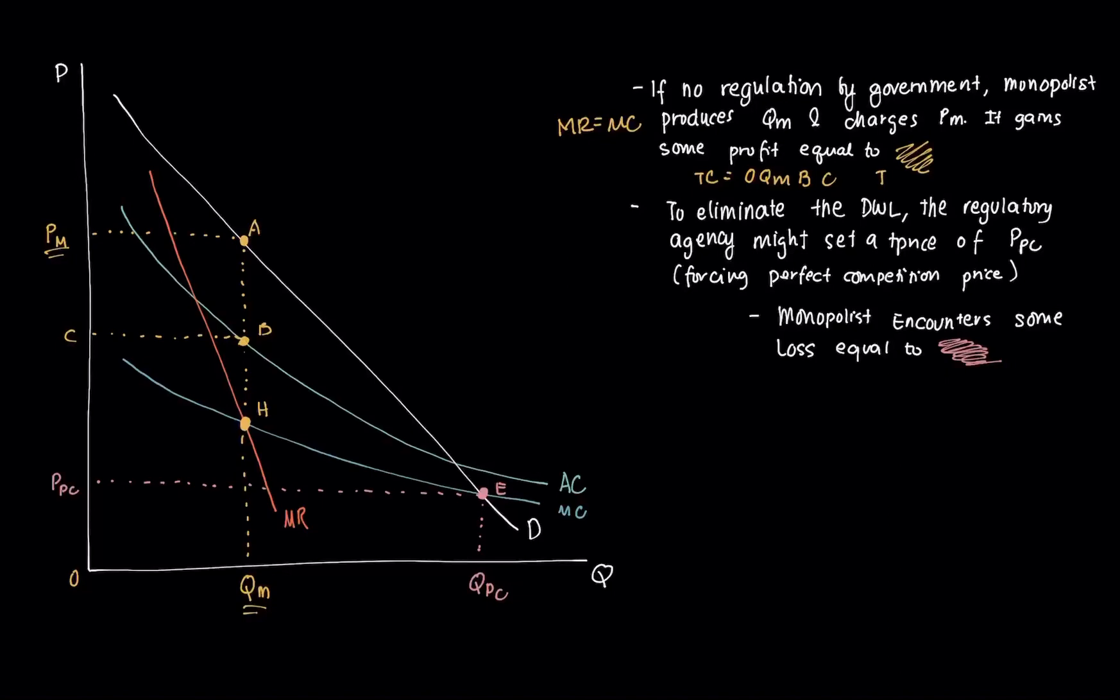Its total revenue is equal to PM A QM zero. The difference between that, of course, is profit, and you can see that this shaded area here is the profit that the monopolist accrues because there's no government regulation.